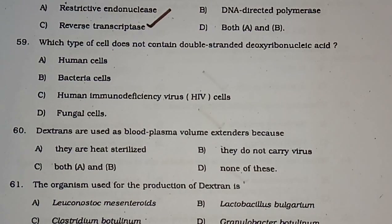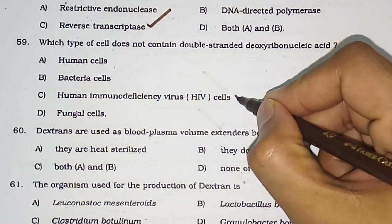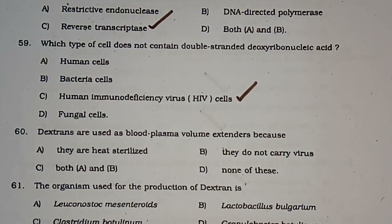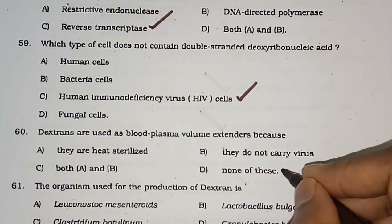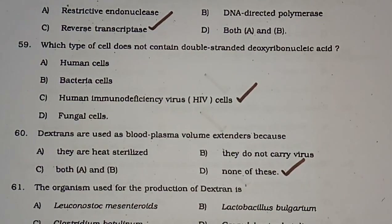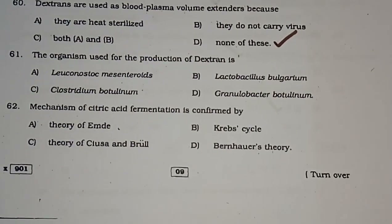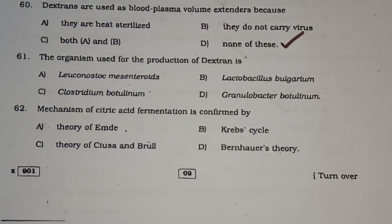Question number 59: Which type of cell does not contain double-stranded DNA? Options are human cell, bacteria cell, HIV cell, fungus cell. The correct answer is HIV cells. Question number 60: Dextrans are used as blood plasma volume extenders because — (A) they are heat sterilized, (B) they do not carry virus, (C) both A and B, (D) none of these. The correct answer is none of these.